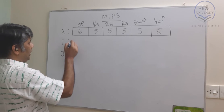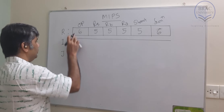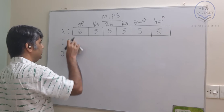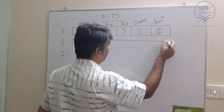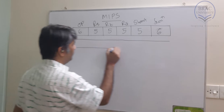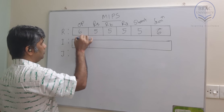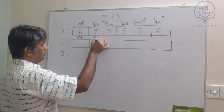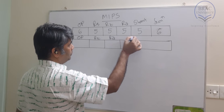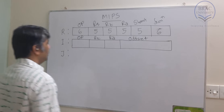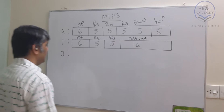Now coming to the I-type instruction, let's design its format. The I-type instructions are also 32 bits. It has opcode, then RS, then RT, and then offset. Opcode is again 6 bits, RS is 5 bits, RT is 5 bits, and offset is 16 bits.